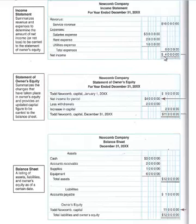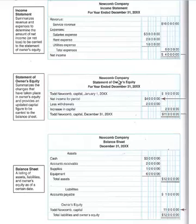These are your total expenses for the period. The expense total is subtracted from the revenue total to arrive at the company's net income. Basically, there are two types of accounts on the income statement: revenues and expenses.